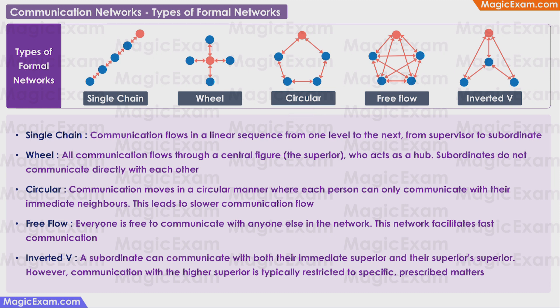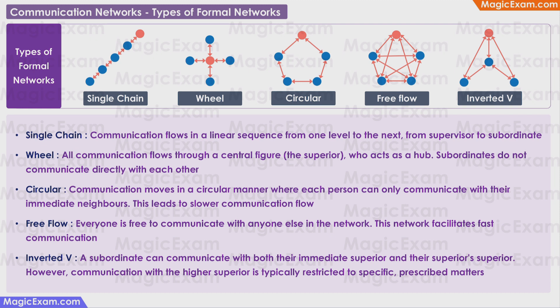In a circular network, communication moves in a circular manner, where each person can only communicate with their immediate neighbors in either direction. This leads to slower communication flow, because information may have to pass through several people before reaching an intended recipient.